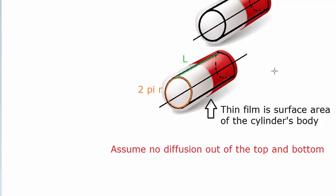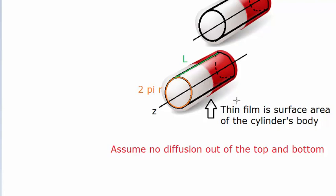That assumption makes this a one-dimensional problem. In Cartesian coordinates we assumed diffusion only in the Z-direction. Here, the Z-direction is along the axis. If you had diffusion through the top and bottom too, that would be a two-dimensional problem — very hard to model. We want to say there's only diffusion happening in the R-direction, coming out of this capsule in circular directions.